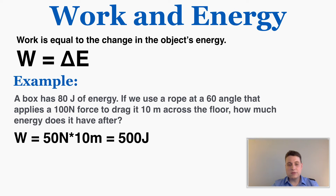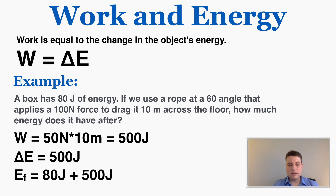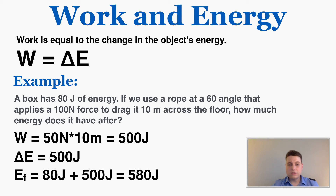The final energy equals the initial energy plus the change: 80 joules plus 500 joules equals 580 joules — that's how much energy the box ends with. So the work done on an object — the parallel force times the displacement — is equal to the change in energy of the object.